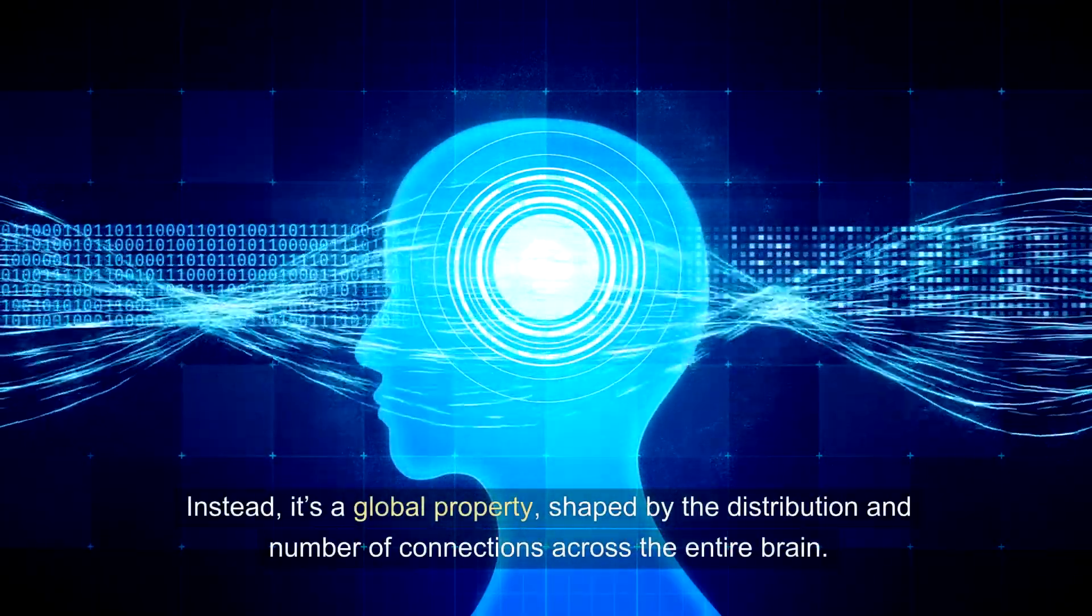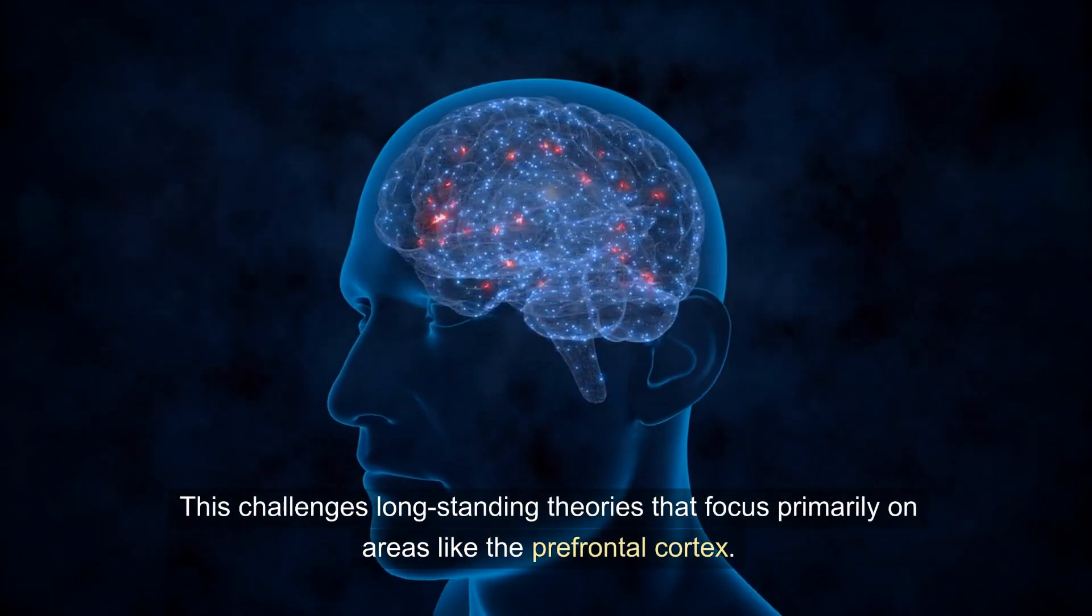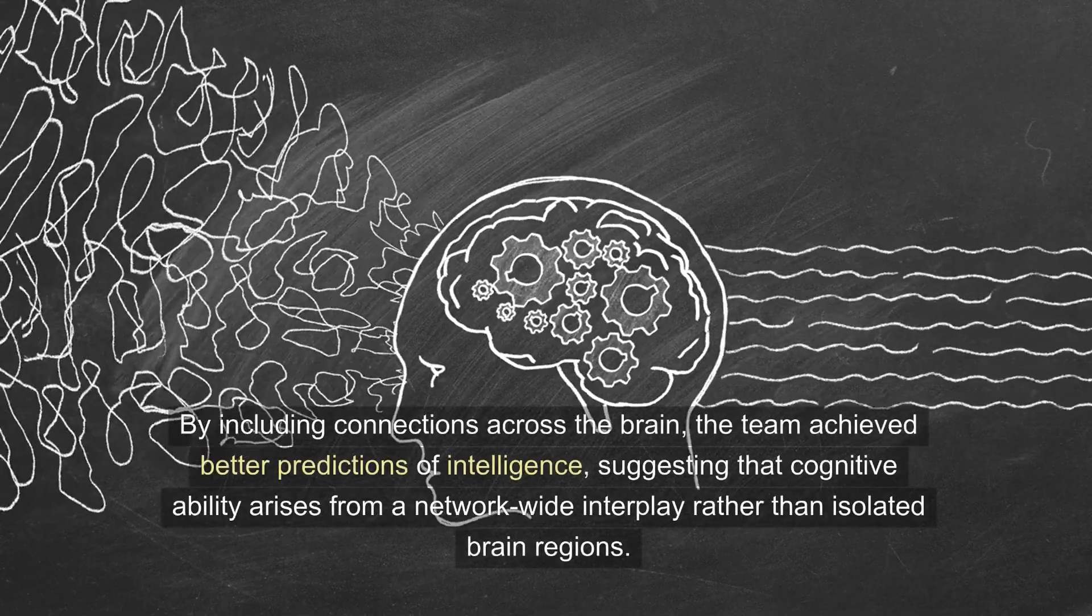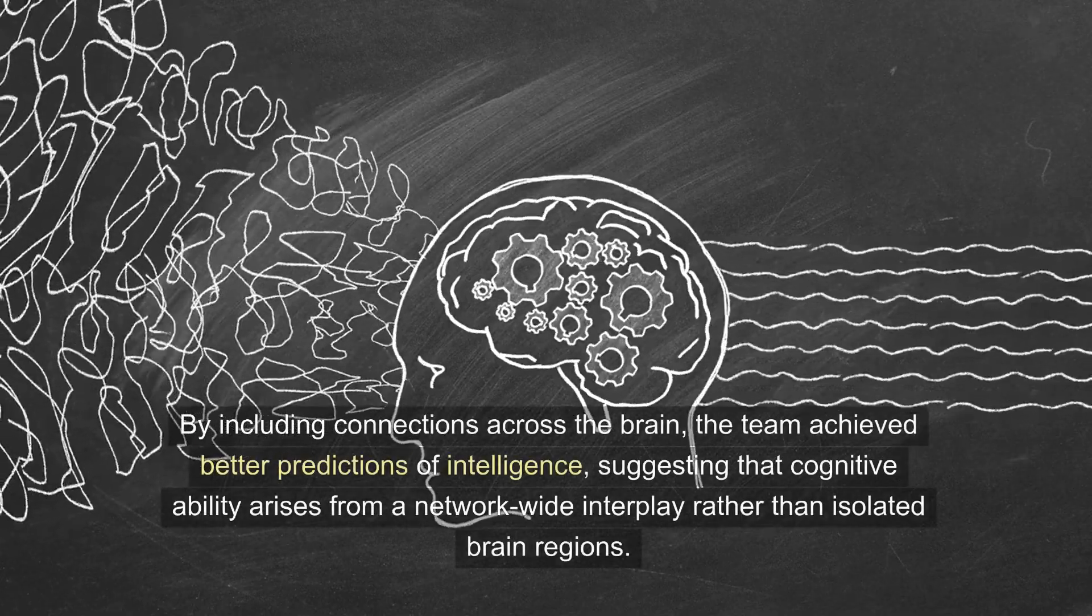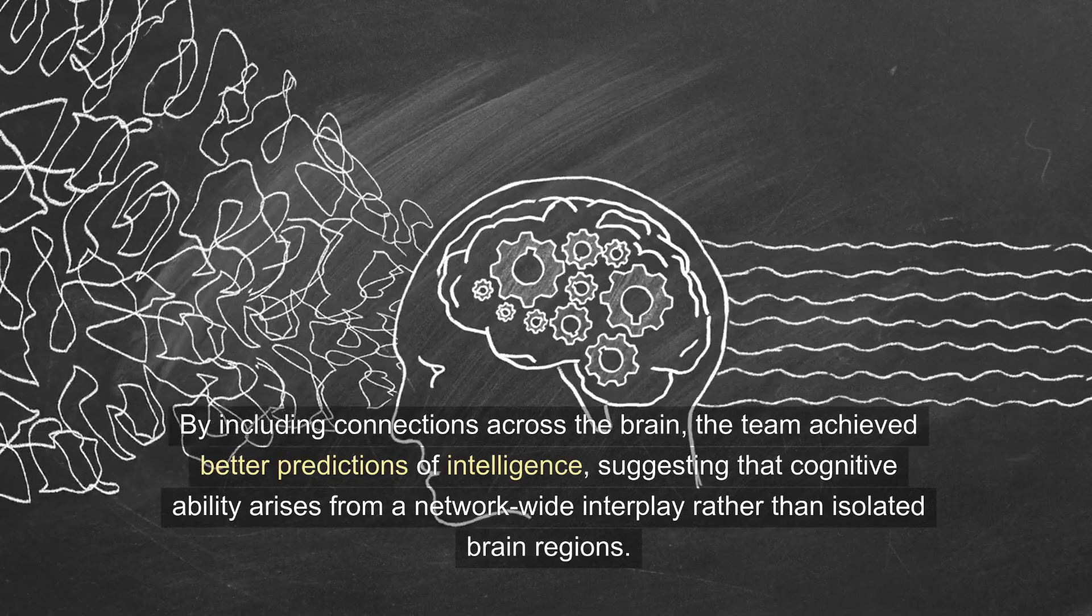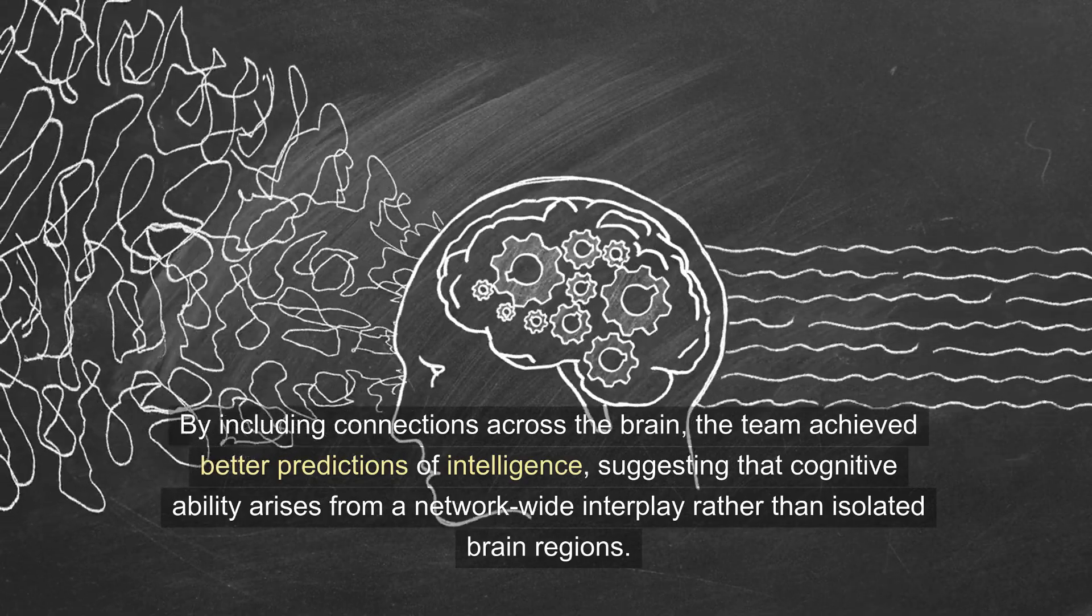across the entire brain. This challenges long-standing theories that focus primarily on areas like the prefrontal cortex. By including connections across the brain, the team achieved better predictions of intelligence, suggesting that cognitive ability arises from a network-wide interplay rather